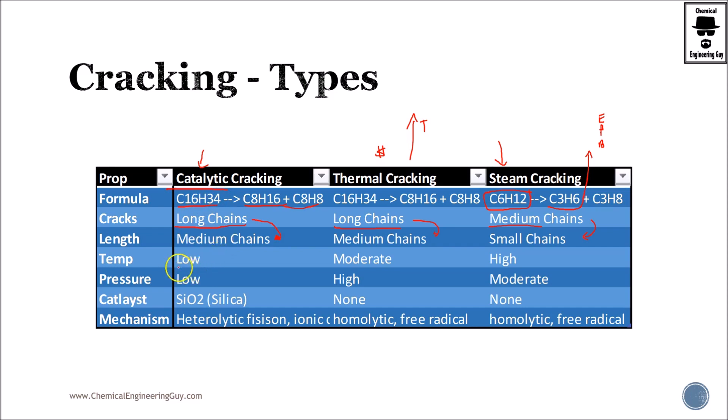Temperatures, well, catalytic cracking is typically low because we have a catalyst. Thermal cracking is moderate because it requires temperature. And steam cracking will require a very high temperature in order to break medium chains into small chains.